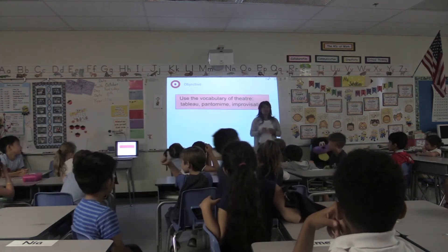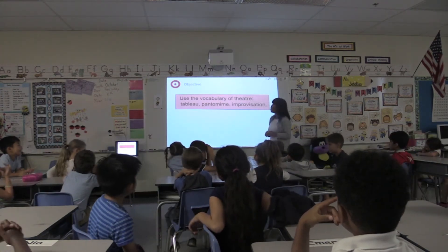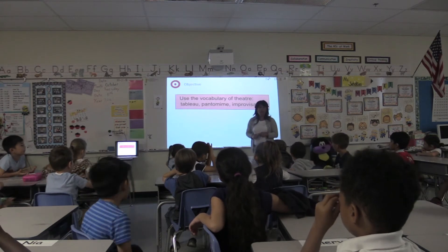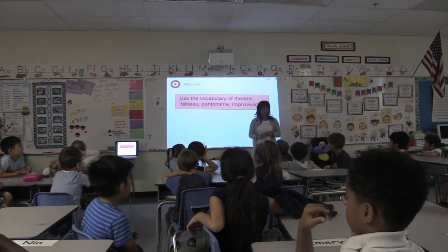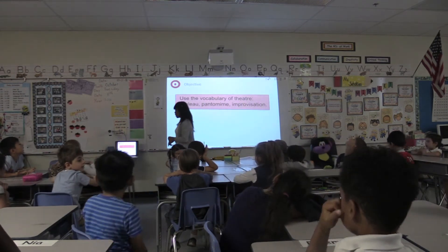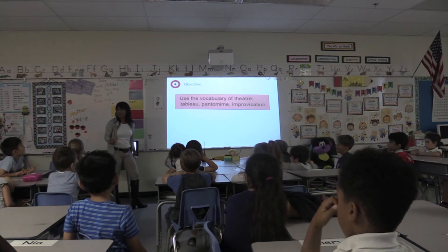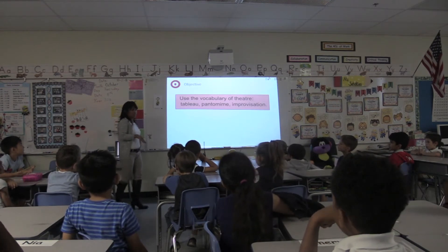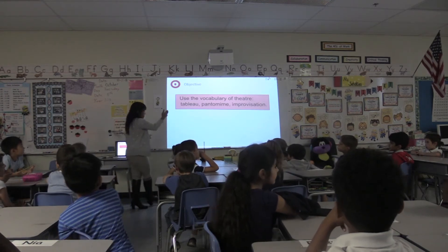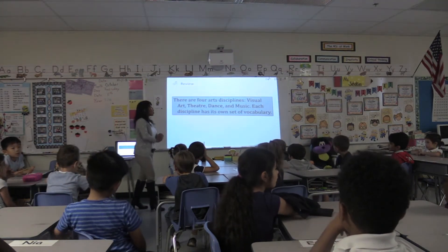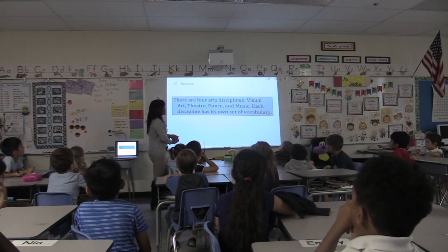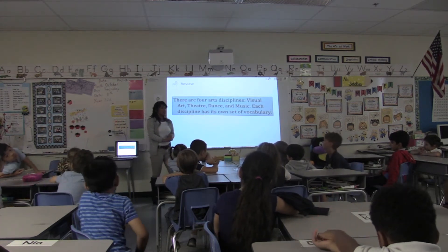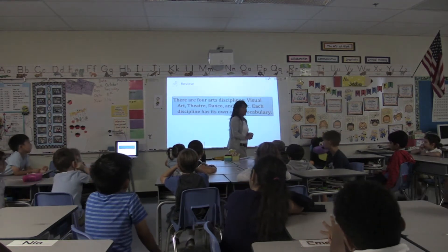Do they work with Ms. Gilbert? Ms. Gilbert is our theater teacher — drama, yes, that's theater. There are four different art disciplines — this is our review. There are four: visual arts, theater, dance, and music. Each set of disciplines has its own vocabulary words. Since we're a visual and performing arts magnet school, our visual art teacher is Ms. Zierhut. I'm looking around your room and I see a lot of beautiful visual arts drawings.